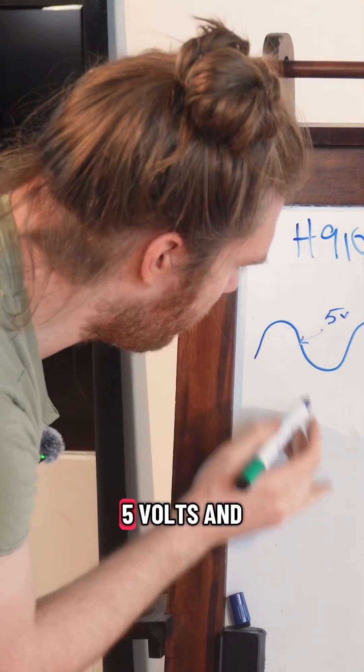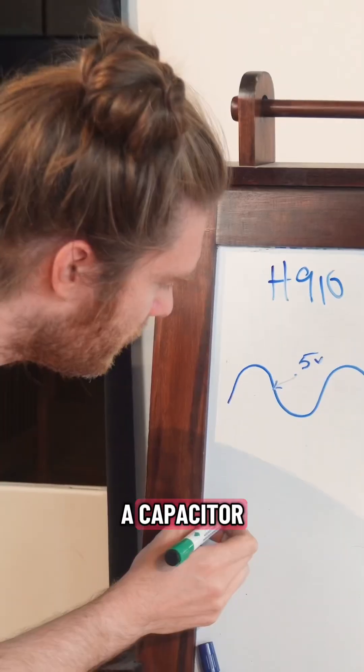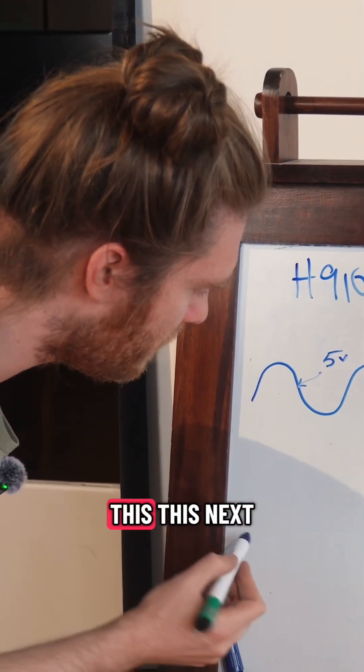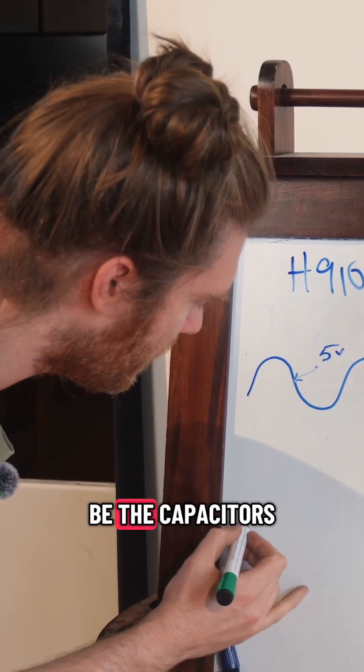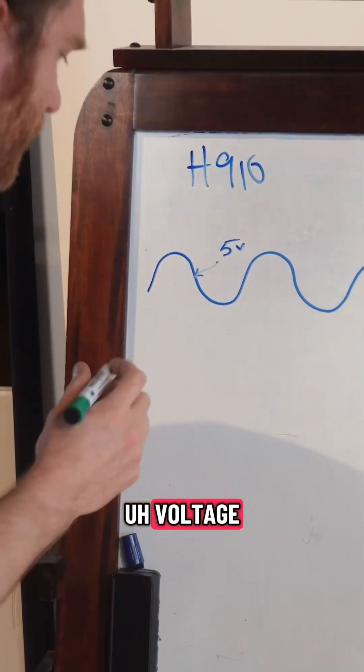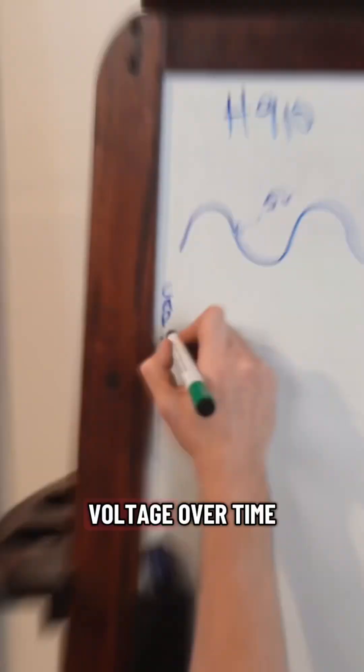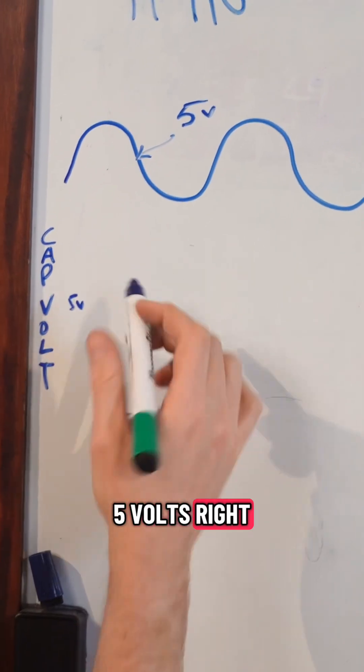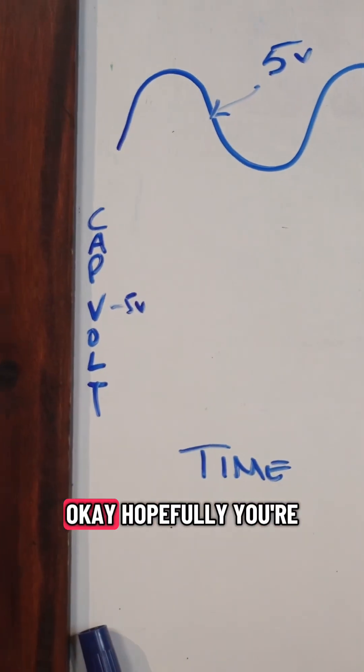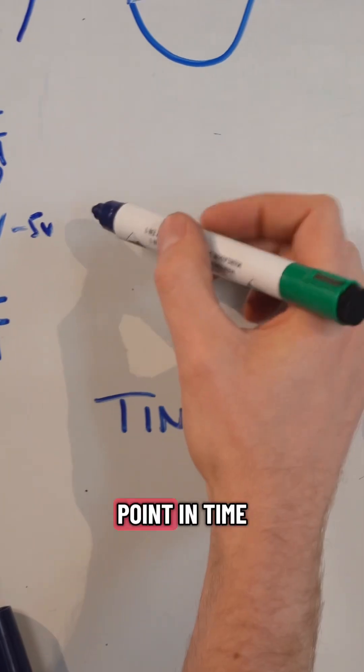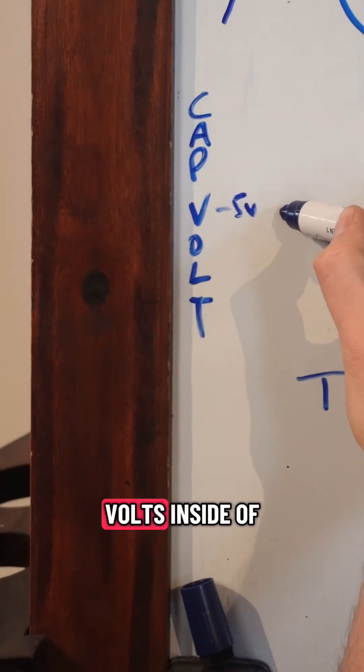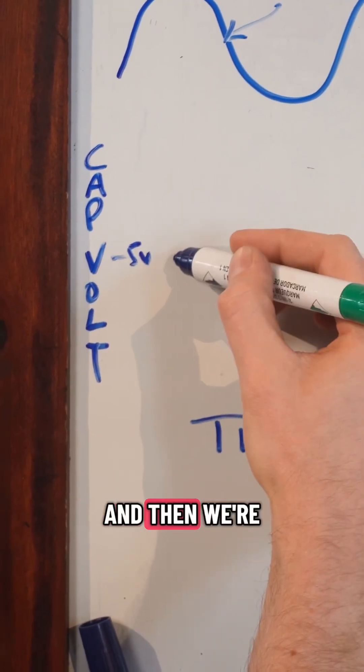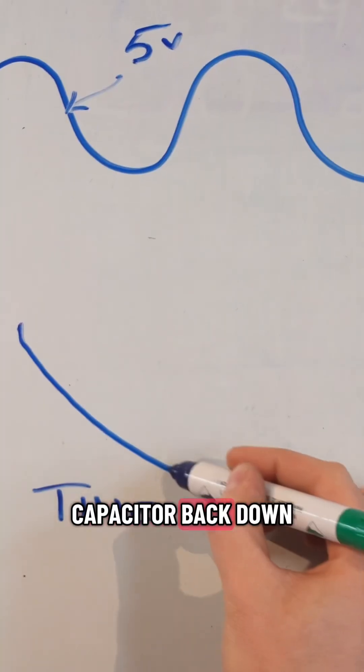Now we are going to take this five volts and put it in a capacitor. Let's say this next line is going to be the capacitor's voltage. We'll say cap voltage over time, five volts right here at this point. Hopefully you're following me. So at this point in time, we have five volts inside of our capacitor, and then we're going to drain the capacitor back down to zero.